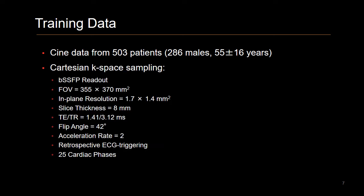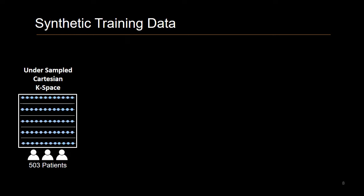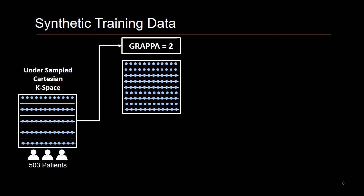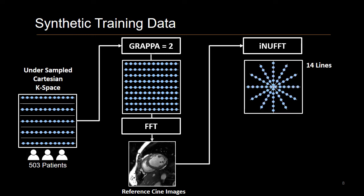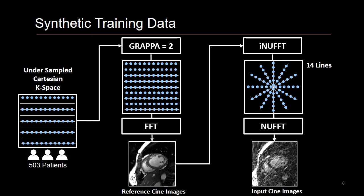The dataset consists of CINE Cartesian imaging with an acceleration factor of 2. To synthesize the radial data we needed, we first took the under-sampled Cartesian K-space, passed it into a GRAPPA function which estimated the missing lines, and then passed it into a Fourier transform which gave us our fully sampled images. We then took these fully sampled images and passed them into an inverse NUFFT which fit them onto 14 K-space lines, effectively giving us our under-sampled radial data. We then passed that into an NUFFT which gave us our aliased images, which were used as the input to the network.